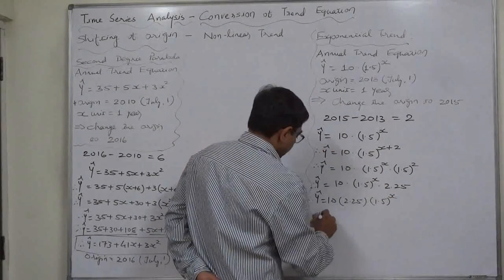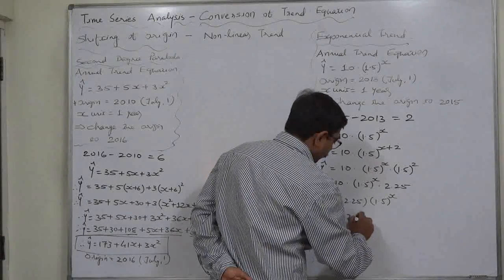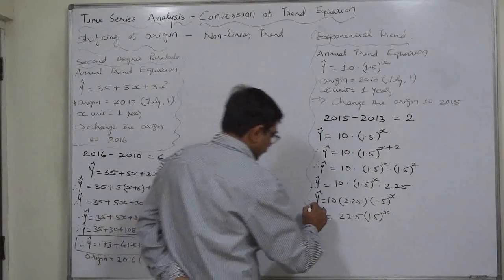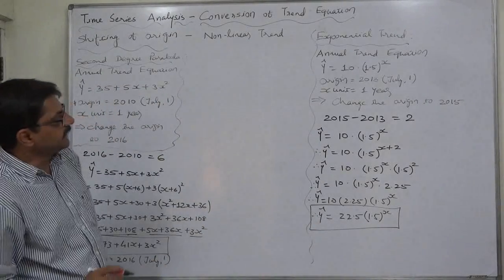So it is like 10 into 2.25 into 1.5 raise to x, that means ultimately it is 22.5 into 1.5 raise to x. This is the new trend, the exponential trend. Now the origin is 2015.